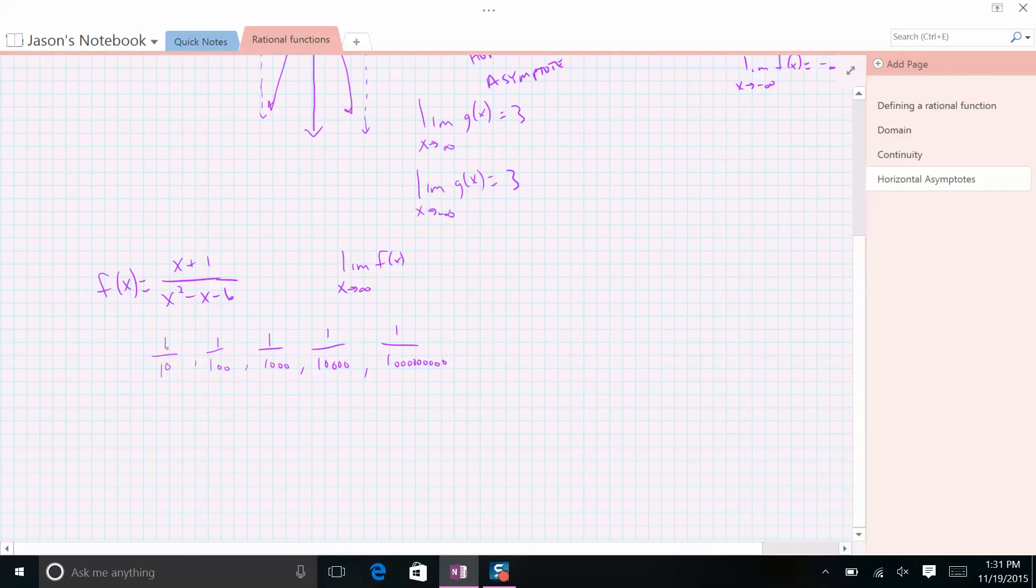So as the spread between, here the difference is 9, here the difference is 99. As the spread between the numerator and the denominator grows, and the denominator is getting bigger faster, that overall number is approaching 0.